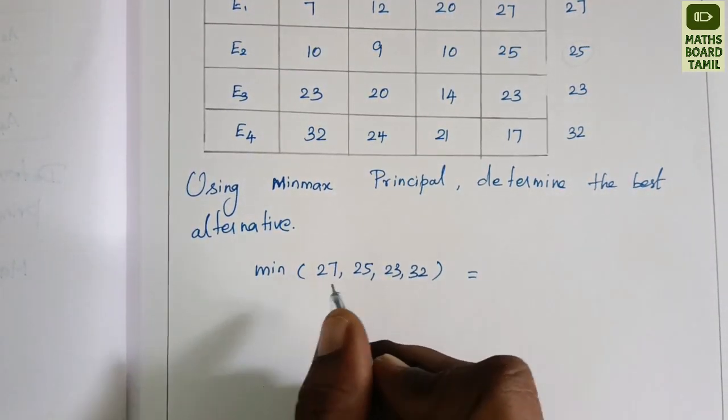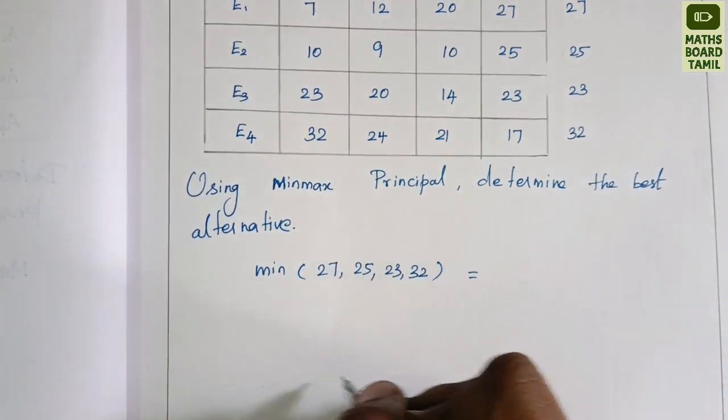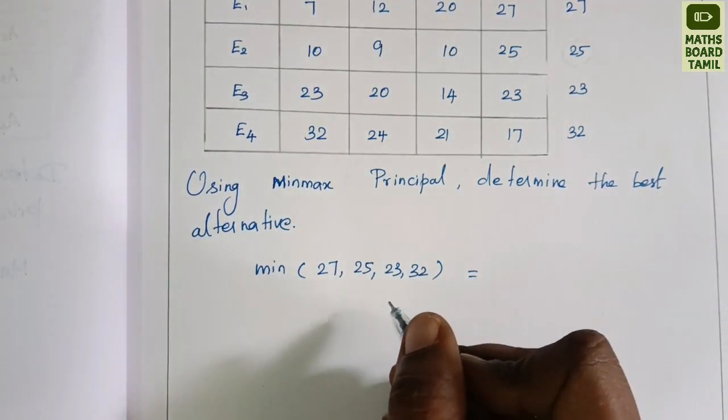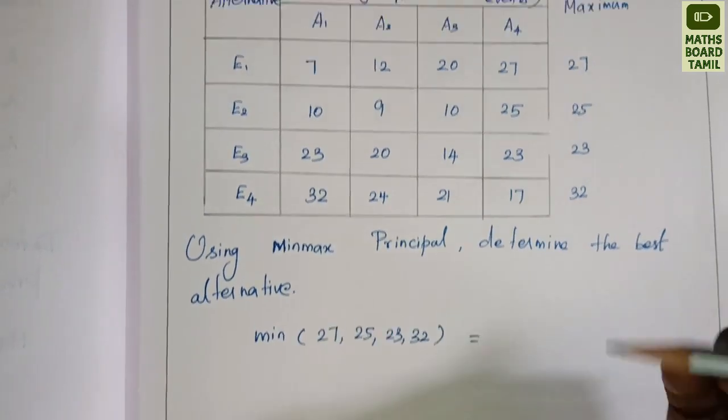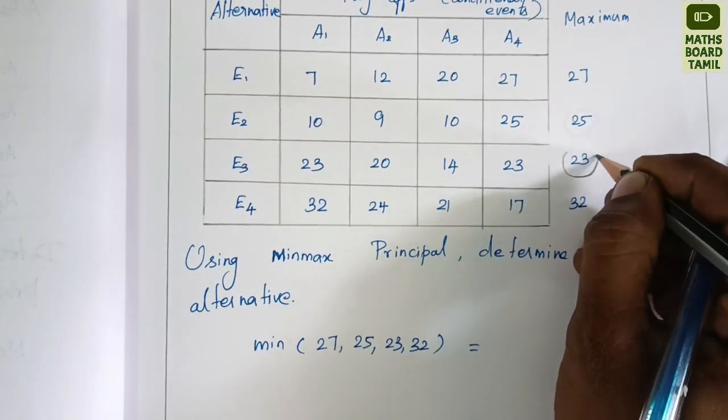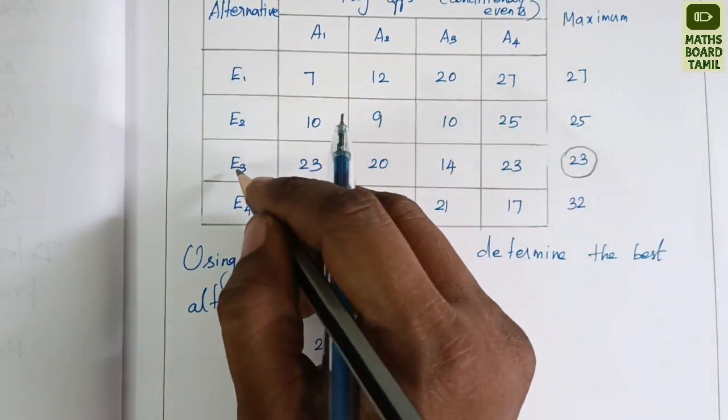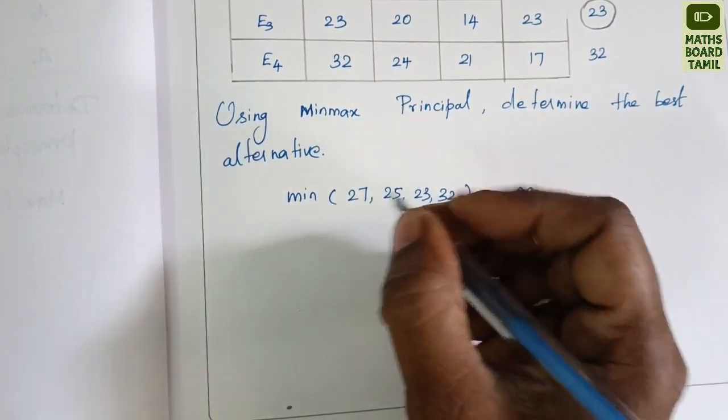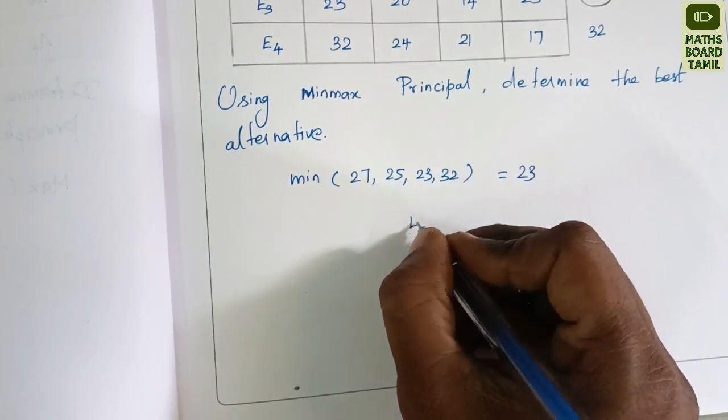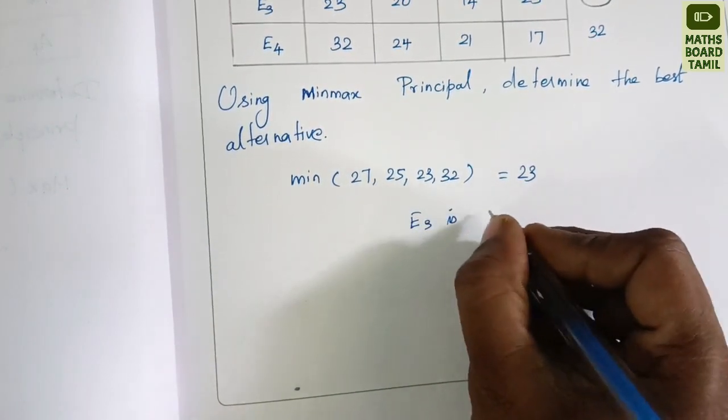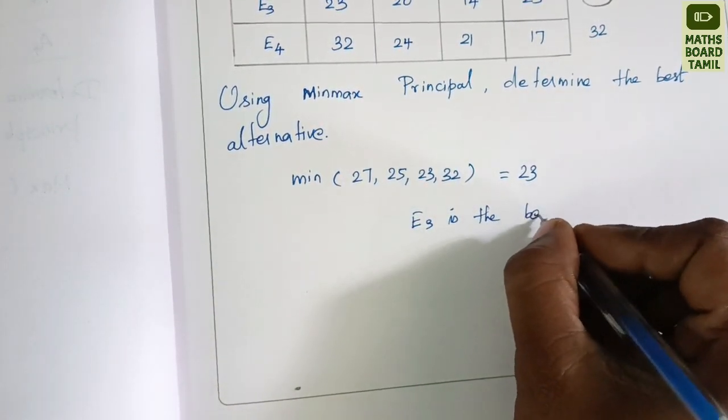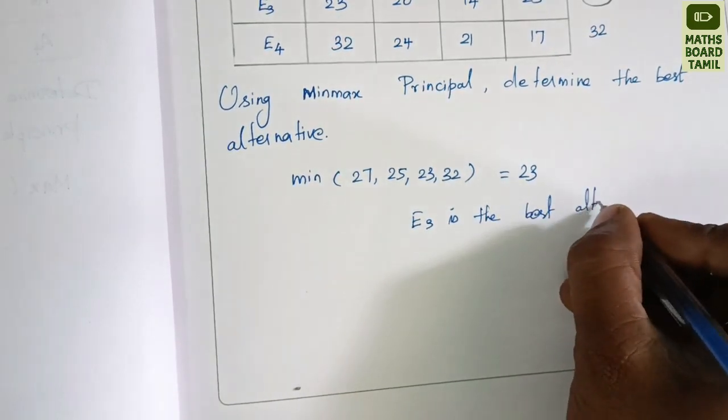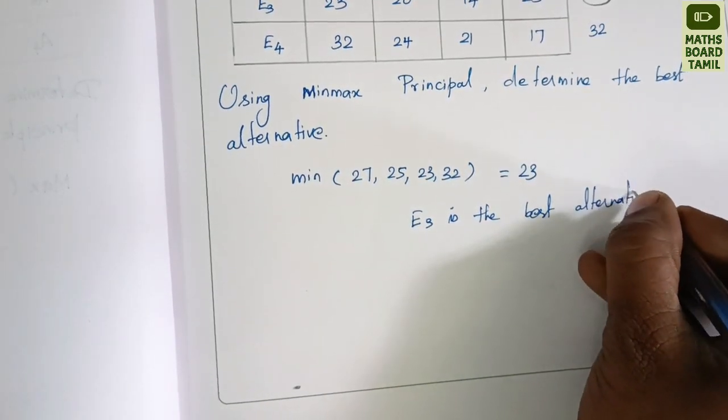Minimax is the minimum of the maximums. The minimum is 23, which corresponds to alternative E3. Therefore, E3 is the best alternative with minimum cost of 23.